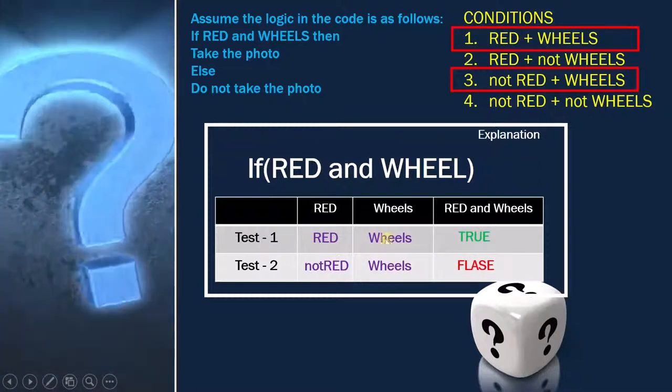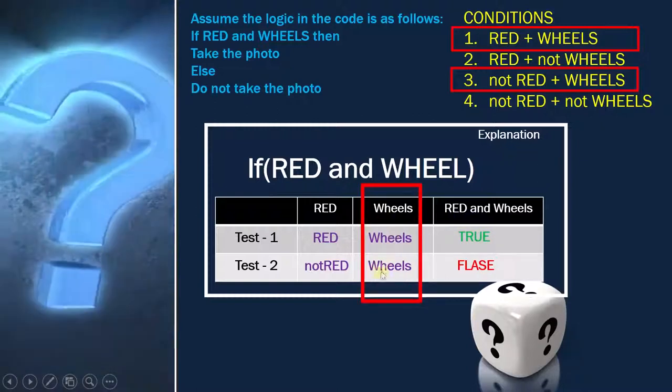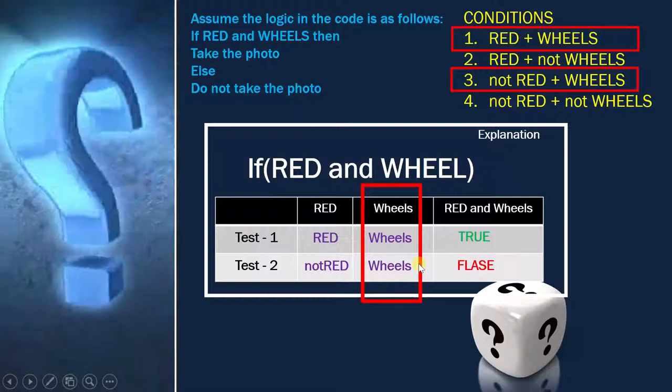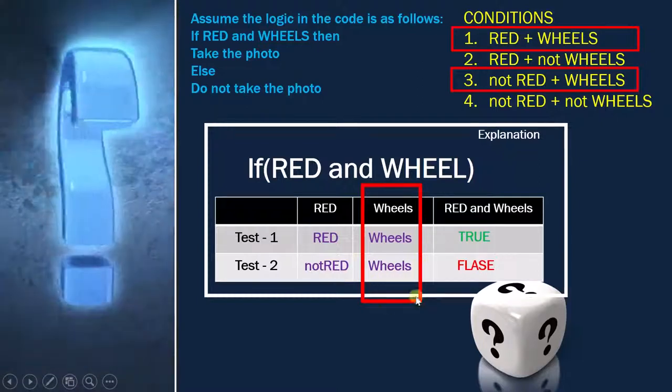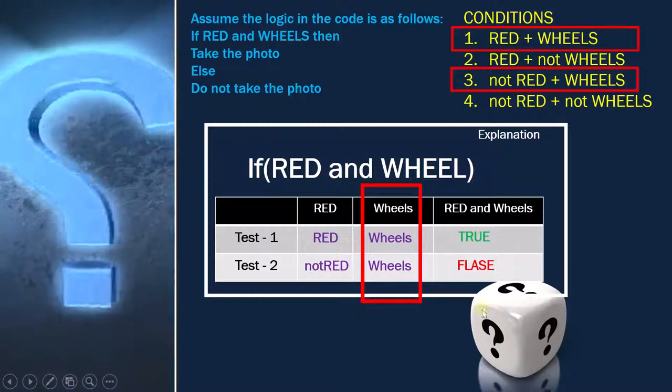But if we see this option, this is also wheels, this is also wheels. So now we are again not able to cover 100% condition coverage, whereas we have covered 100% decision coverage.